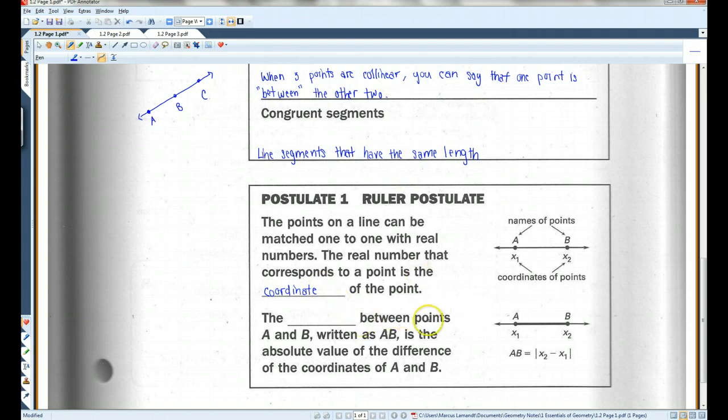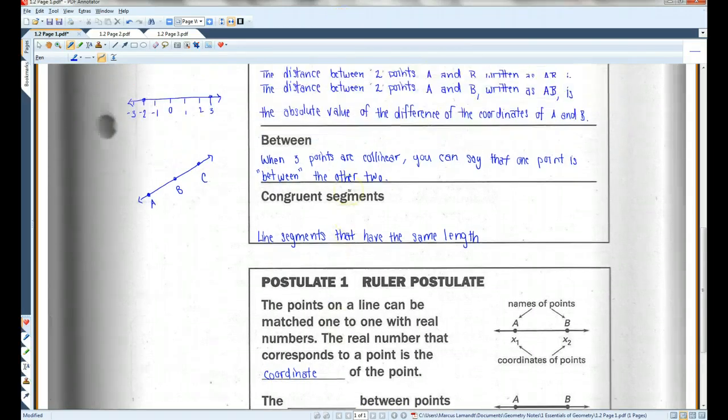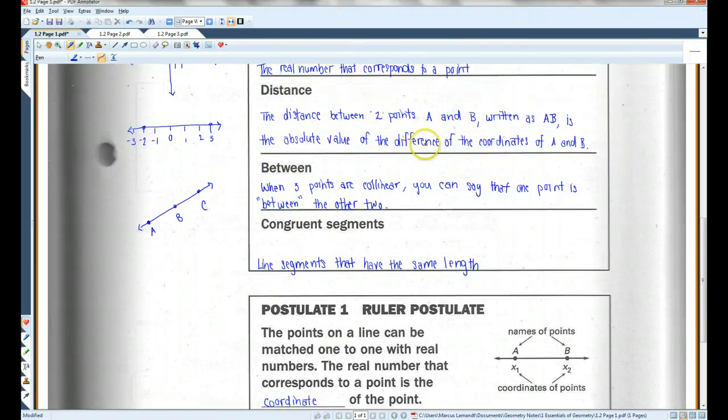The distance between points A and B, written as AB, is the absolute value of the difference of the coordinates of A and B. Now if you look up here, it's the difference.